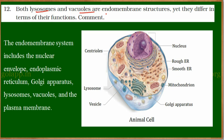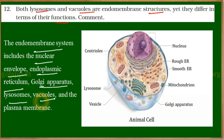Both lysosomes and vacuoles are endomembrane structures, yet they differ in terms of their functions. The endomembrane system includes the nuclear envelope, endoplasmic reticulum, Golgi apparatus, lysosomes, vacuoles, and plasma membrane. These structures are continuous with each other — from the nuclear envelope to the rough and smooth endoplasmic reticulum, then to the Golgi apparatus, and finally to the plasma membrane. All these structures are part of the endomembrane system, but there are still differences between lysosomes and vacuoles.